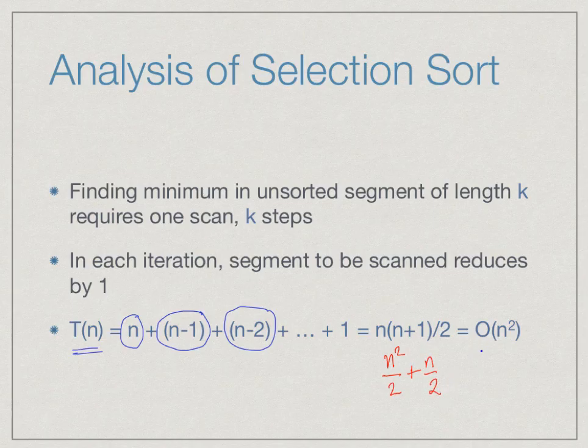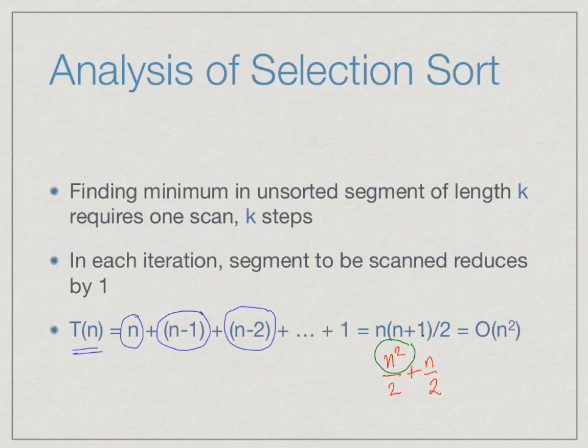Using Big O notation, when we have an expression with multiple terms like n and n², we only need to record the highest term, since n² grows faster than n. So we simplify this to O(n²). Any standard algorithms book will explain how to calculate Big O, but for our purposes it's enough to remember that Big O just takes the highest term in the expression.